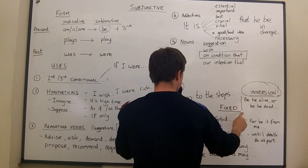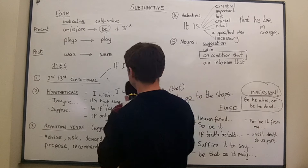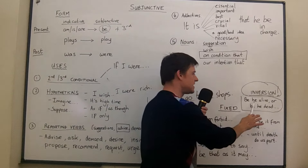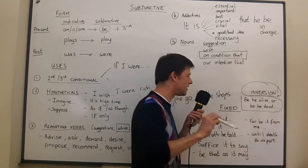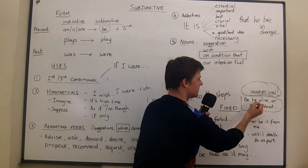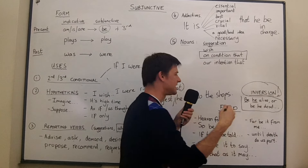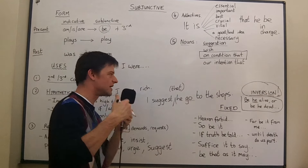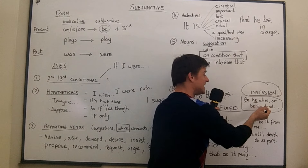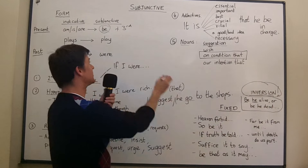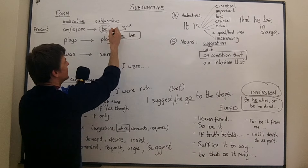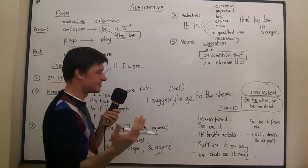A clear archaic example is from the nursery rhyme Jack and the Beanstalk: 'Be he alive or be he dead, I'll grind his bones to make my bread.' Instead of 'if he is alive or if he is dead,' it's inverted — 'be he alive.' We're still using 'he be' but in inverted form. It sounds unusual but it appears in many archaic forms.